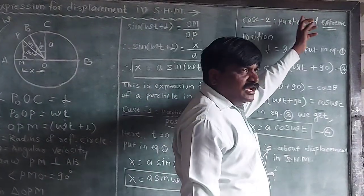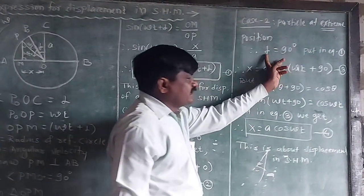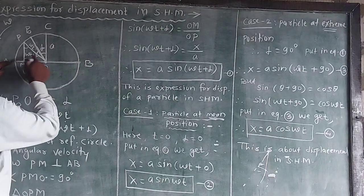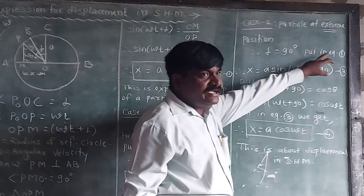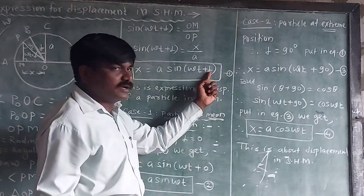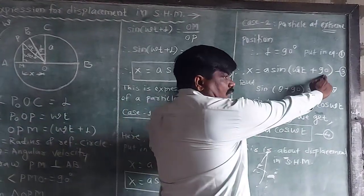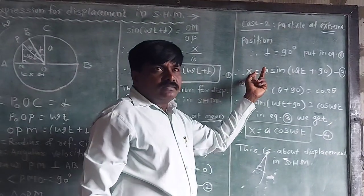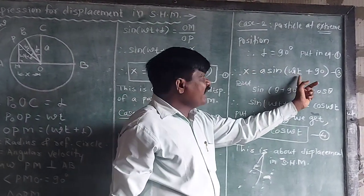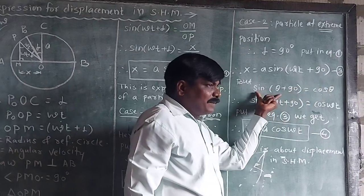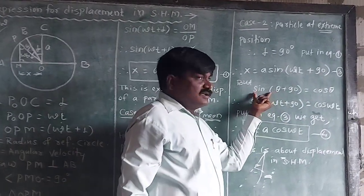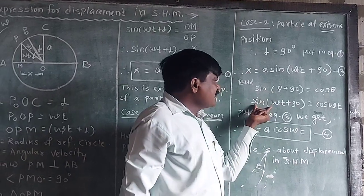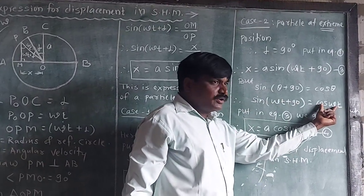Case number 2: particle at the extreme position. X equals A sin(omega T plus 90). Since sin(90 plus theta) equals cos theta, this becomes X equals A sin(omega T plus 90) equals A cos omega T.